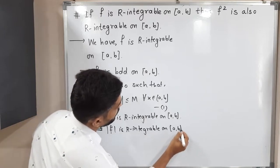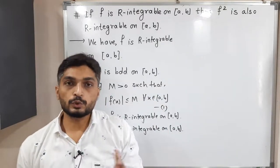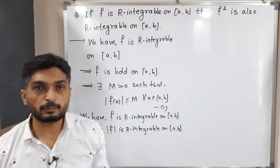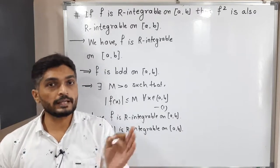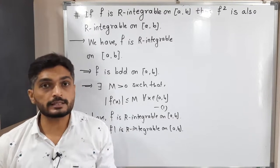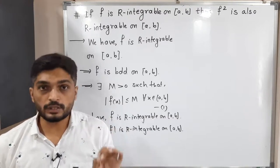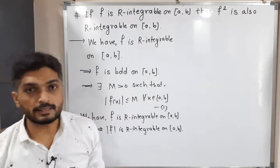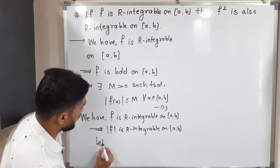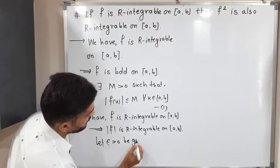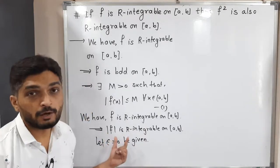What we have to prove is that f² is Riemann integrable. There are two methods: either we prove the upper integral equals the lower integral, or we use the epsilon definition, also called the Riemann criterion. Here I am going to follow the second method using the epsilon definition to prove f² is Riemann integrable. So let epsilon > 0 be given.